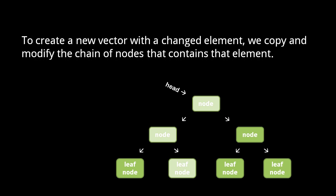Now if we wish to create a modified copy of a vector in which we replace the element at an index, the same traversal algorithm is used to find the chain of nodes from the head down to the leaf node that contains that element. That chain is then copied, and in the copied leaf node, the element is replaced, and a new vector object is created which points to the head of this new chain of nodes.